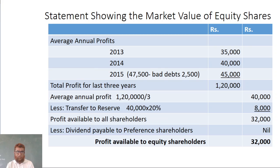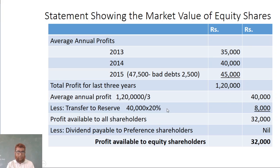For the yield method, we calculate the annual average profit. Profits are: 2013 — 35,000; 2014 — 40,000; 2015 — 47,500 minus 2,500 bad debts equals 45,000. Total is 1,20,000. Average annual profit is 40,000. Less transfer to reserve at 20% is 8,000, so profit available to all shareholders is 32,000.